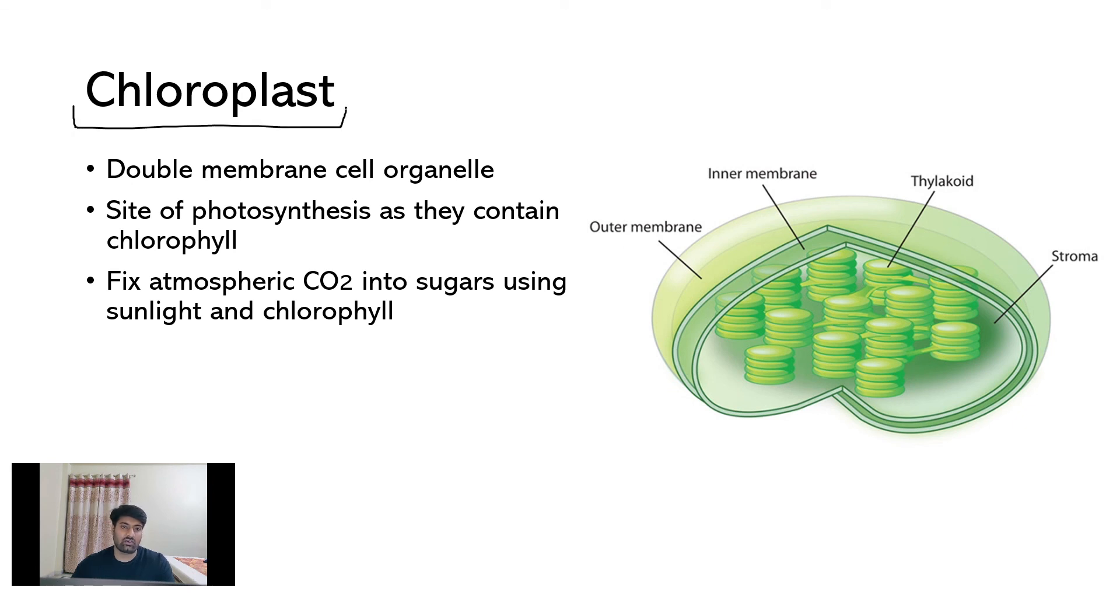The next and the last cell organelle for our discussion is called chloroplast. It is a double membrane cell organelle. It has two membranes just like mitochondria, the outer chloroplast membrane and the inner chloroplast membrane. It is the site for photosynthesis as it contains the pigment chlorophyll. It fixes the atmospheric CO2 into sugars using sunlight and chlorophyll which is used by plants as its food source.